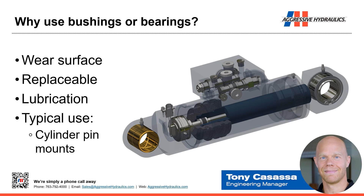First question: what is a bushing or a bearing? It's a wear surface — a surface that's intended to be worn. They typically are replaceable. If we think about a cylinder with a pin mount without a bushing, if that welded-on lug gets worn, that lug is an integral part of the cylinder and would be fairly difficult to replace. Whereas a bushing or a bearing is modular and can be taken out and put in. Oftentimes, they provide lubrication or a means to distribute lubrication. A typical application we're talking about for hydraulic cylinders is the pin mount.